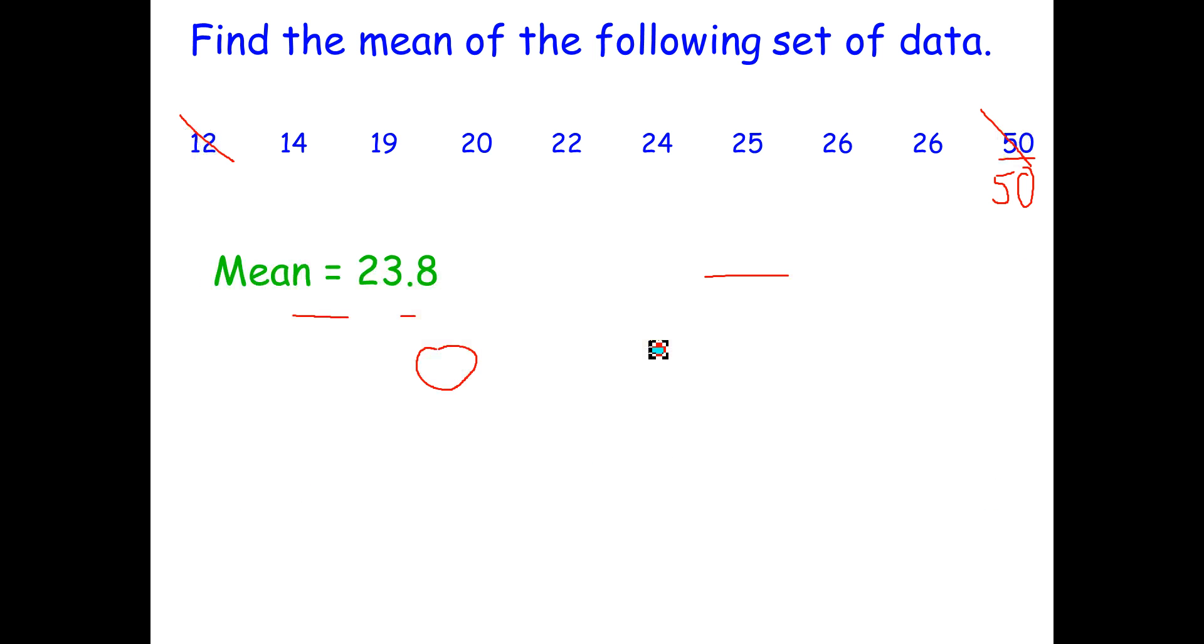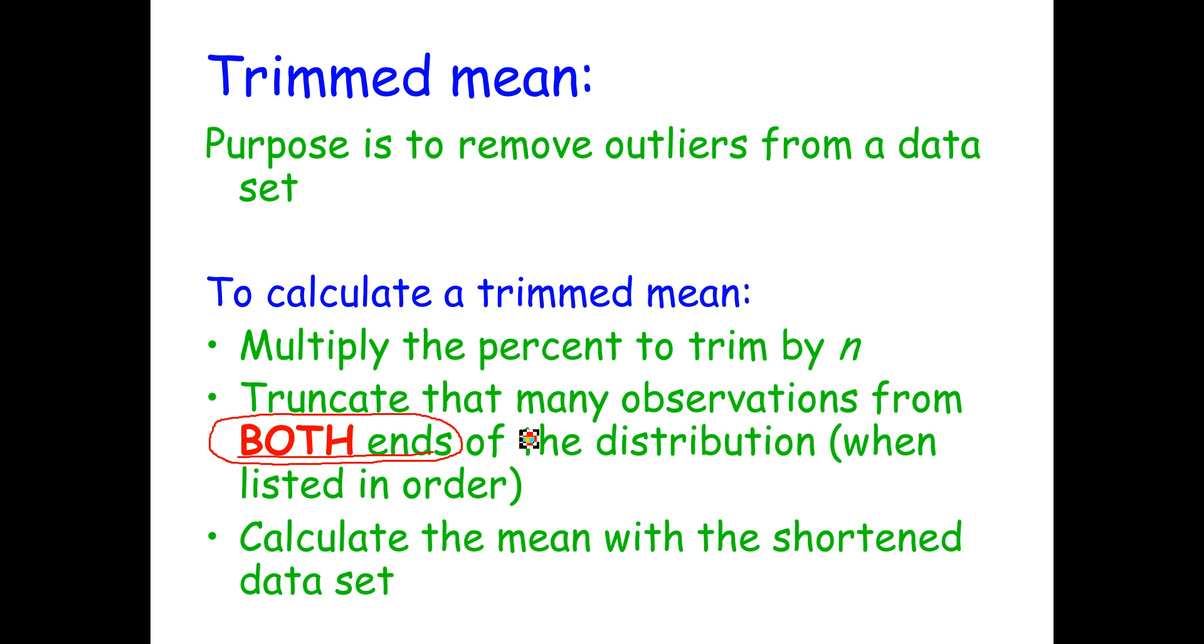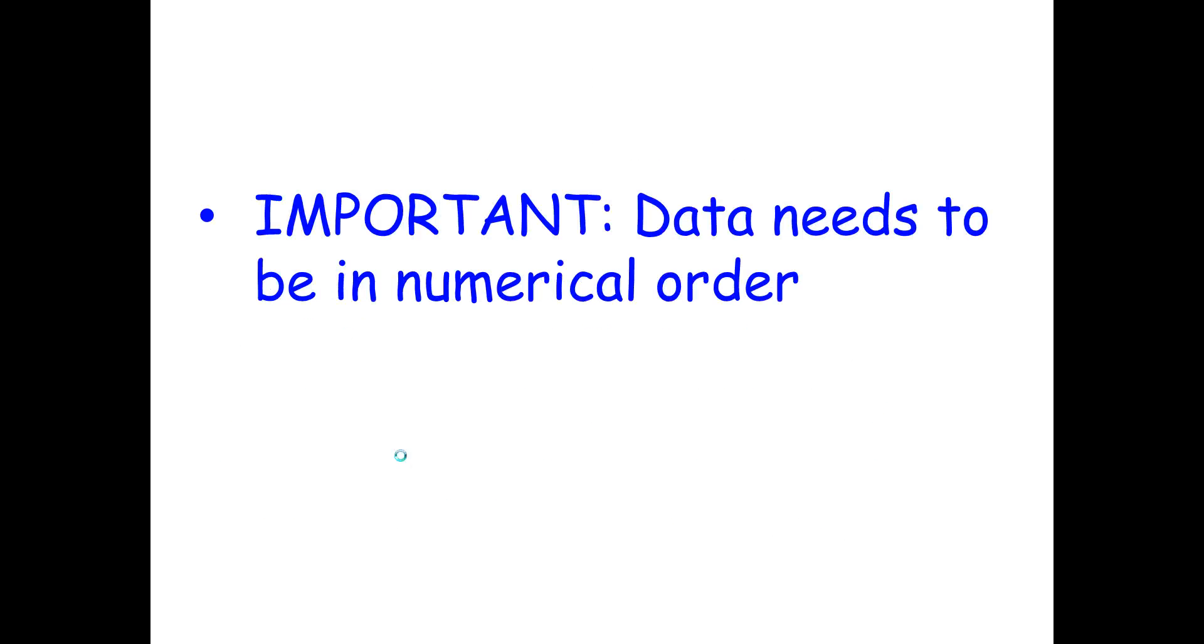So let's review real quick. For a trimmed mean, we're taking away values from each end of the data set in order to remove outliers that can skew it. We have to trim it by taking away data points from each end of the set and the data itself needs to be in numerical order from least to greatest or greatest to least.